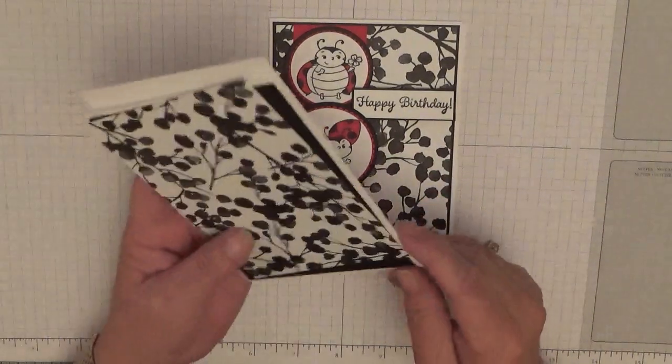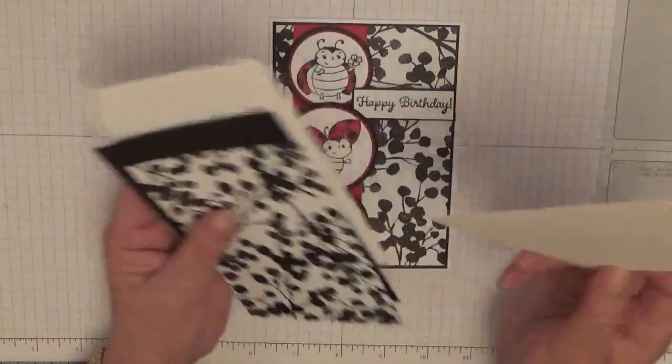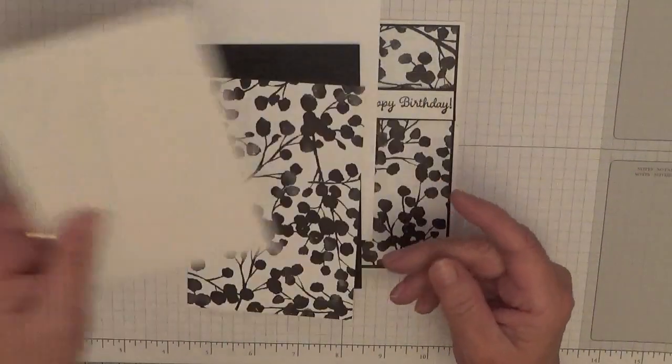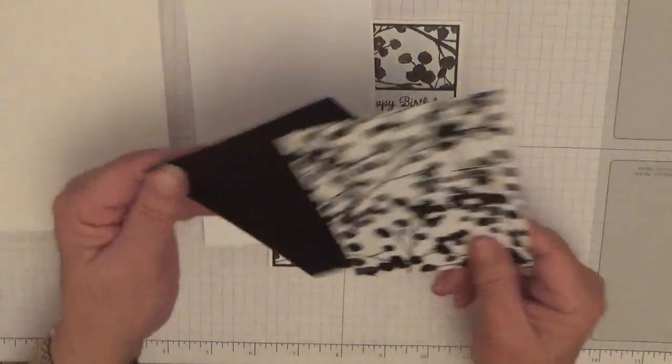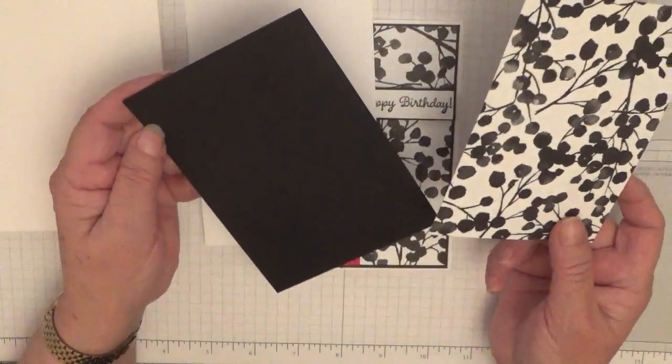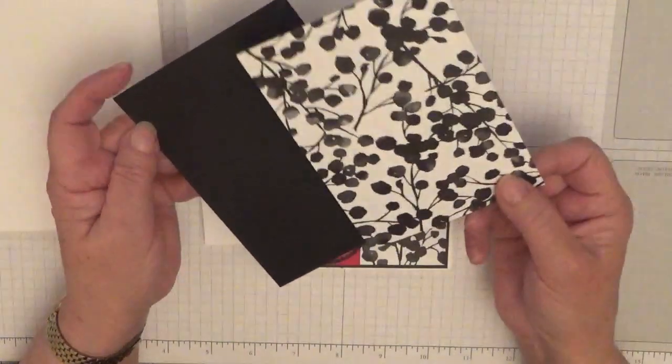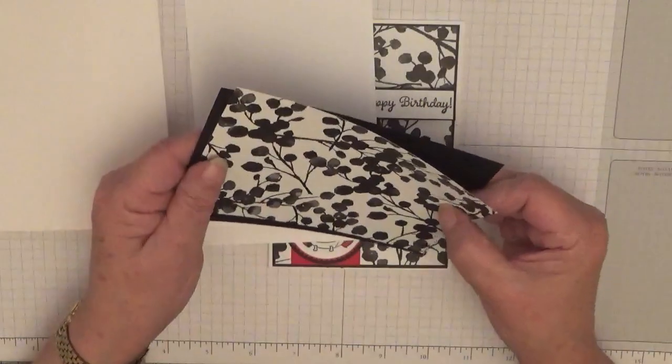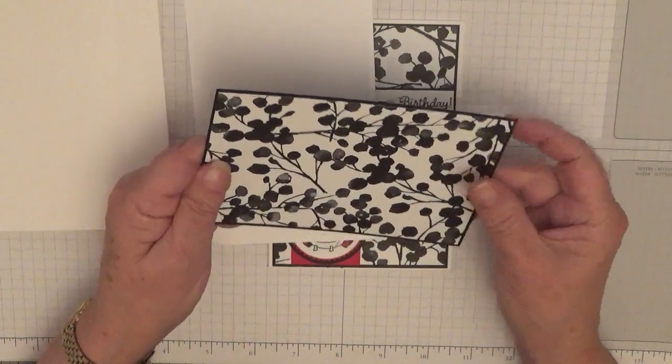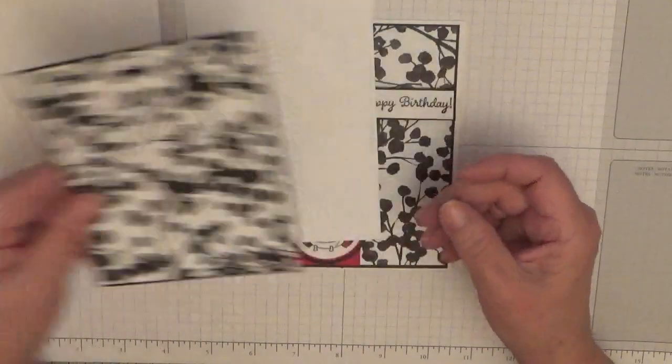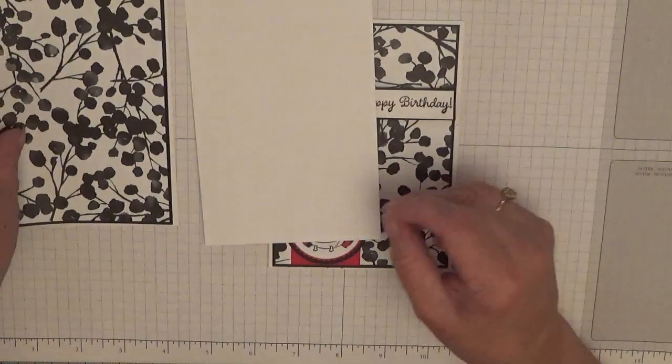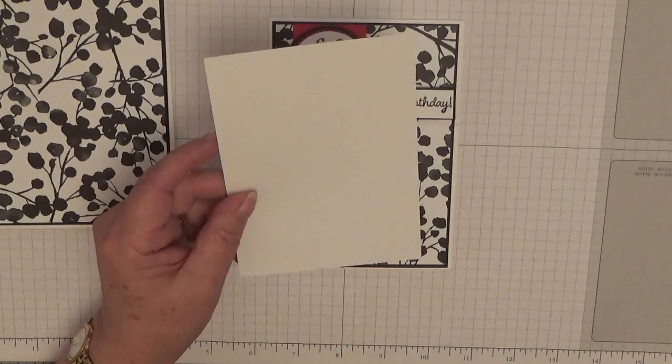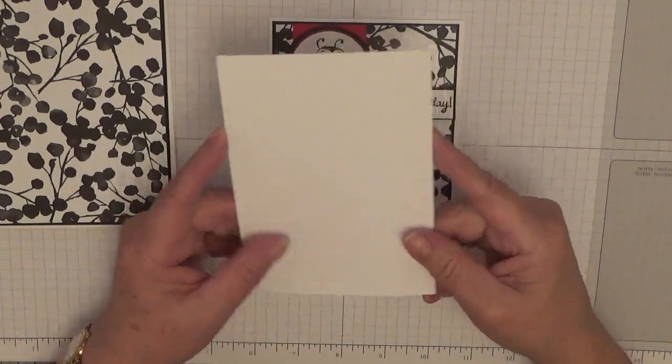So to make this card you'll need a card base of 8 1/4 by 5 7/8, scored at 4 1/8 and folded in half. A piece of basic black at 5 and 5/8 by 3 and 7/8, and a piece of DSP. This is a retired DSP but I wanted a black and white piece. And I have a piece for the inside of 5 and 5/8 by 3 and 7/8.